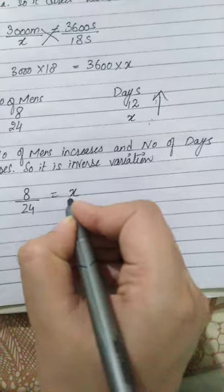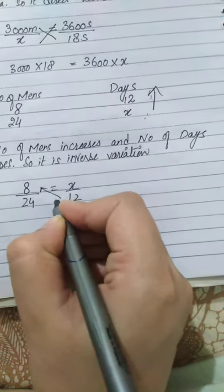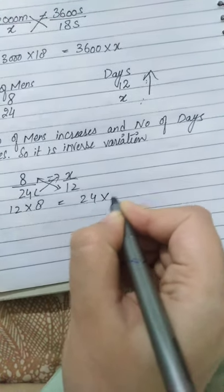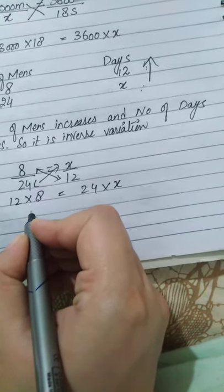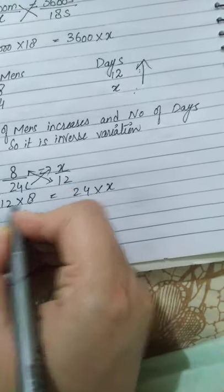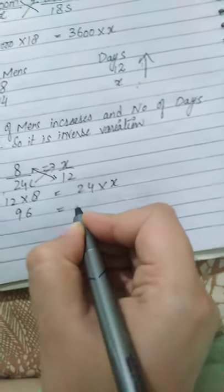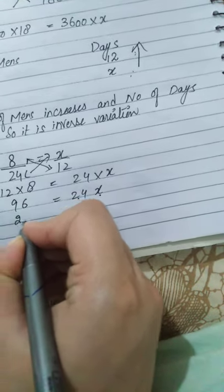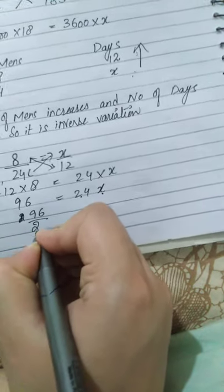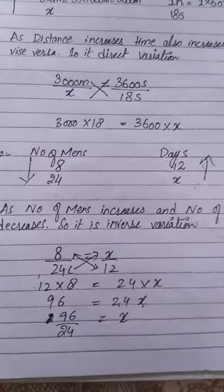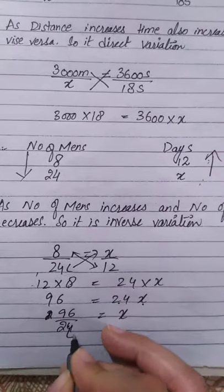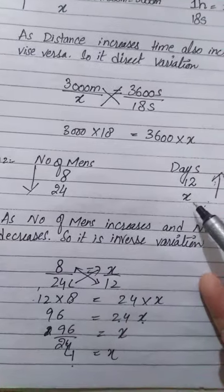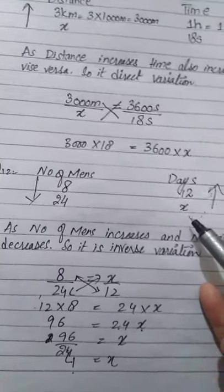Write X, perform cross multiplication and solve. Multiply 12 by 8 to get 96, which equals 24 times X. Since 24 is multiplying with X, divide both sides by 24. You get the answer: 4 days. So if the number of men is 24, the task is completed in 4 days.